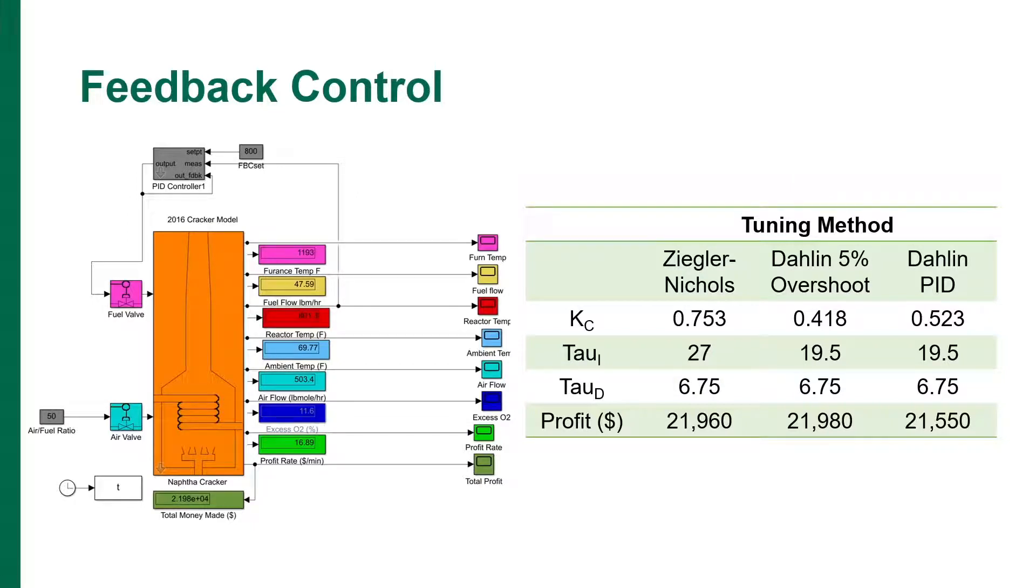The first type of control that we implemented to control the reactor temperature was feedback control of the proportional integral derivative or PID type. Among other variables, the reactor temperature measurement is dependent on the amount of fuel fed to the furnace. So this measurement is compared to a set point of 800 degrees Fahrenheit, which then results in the controller manipulating the fuel valve, which is normally 50% open.